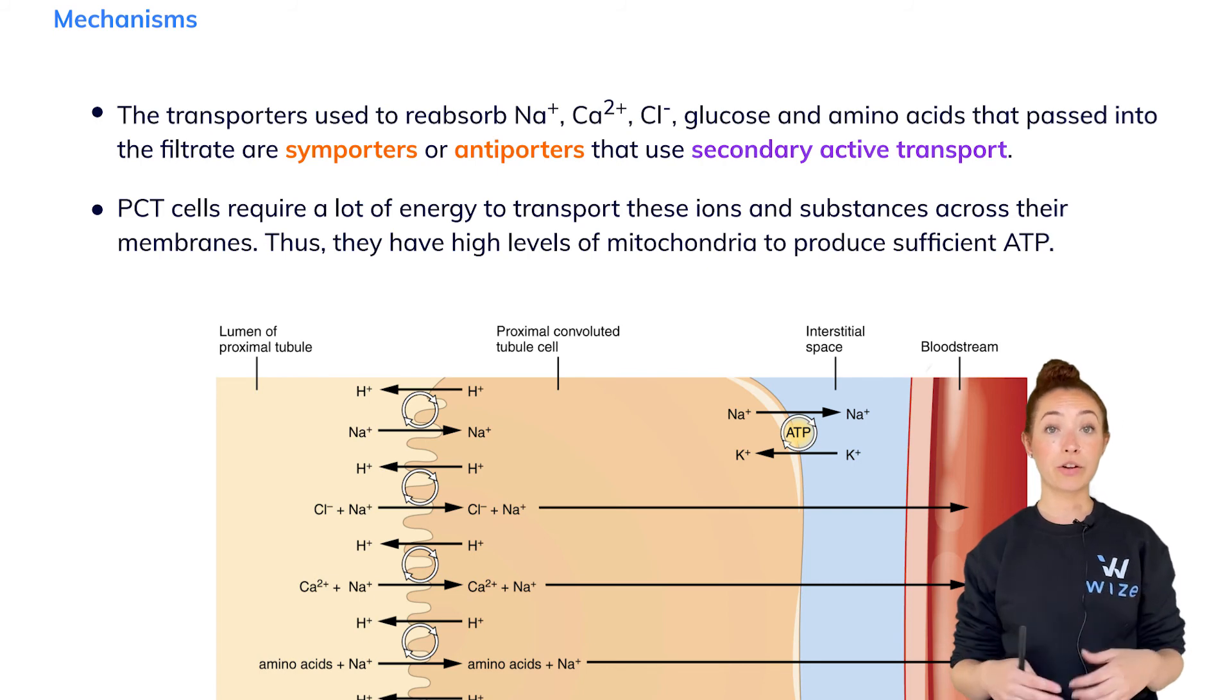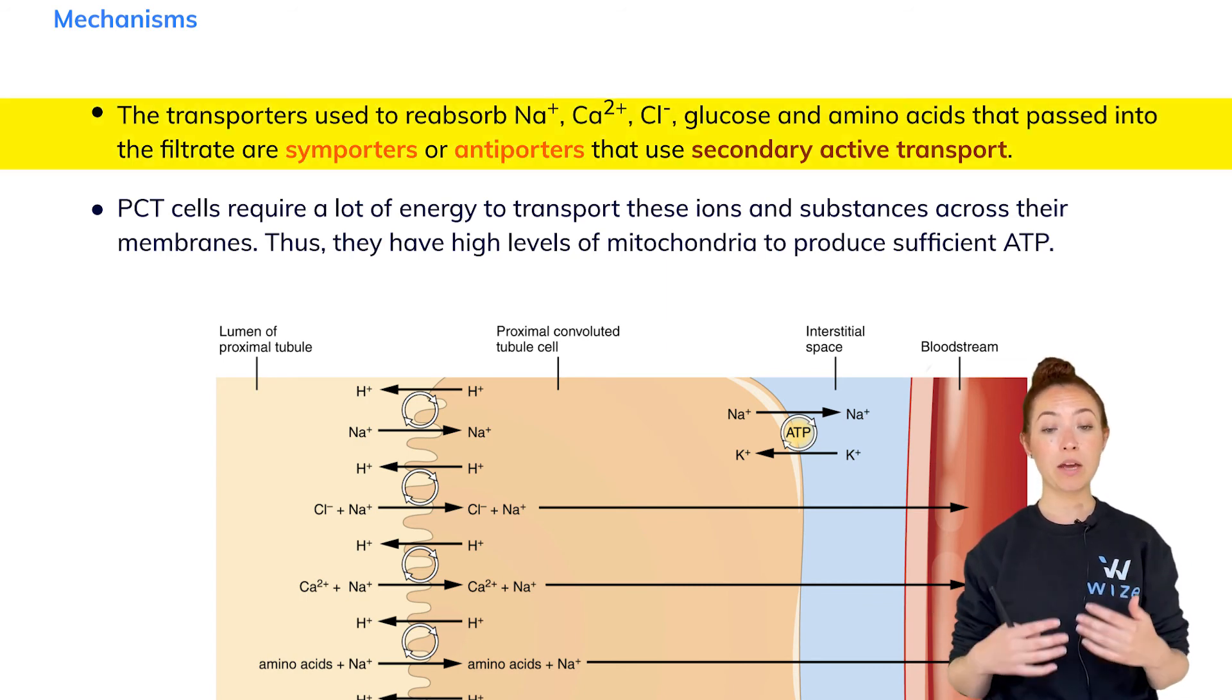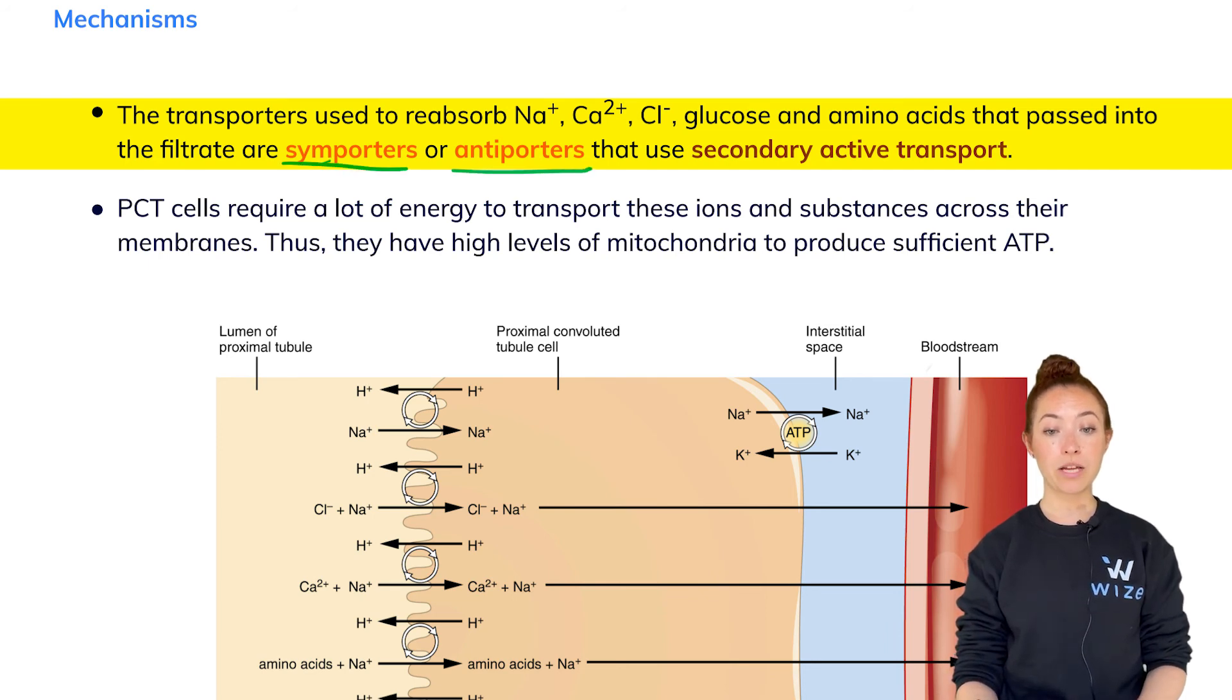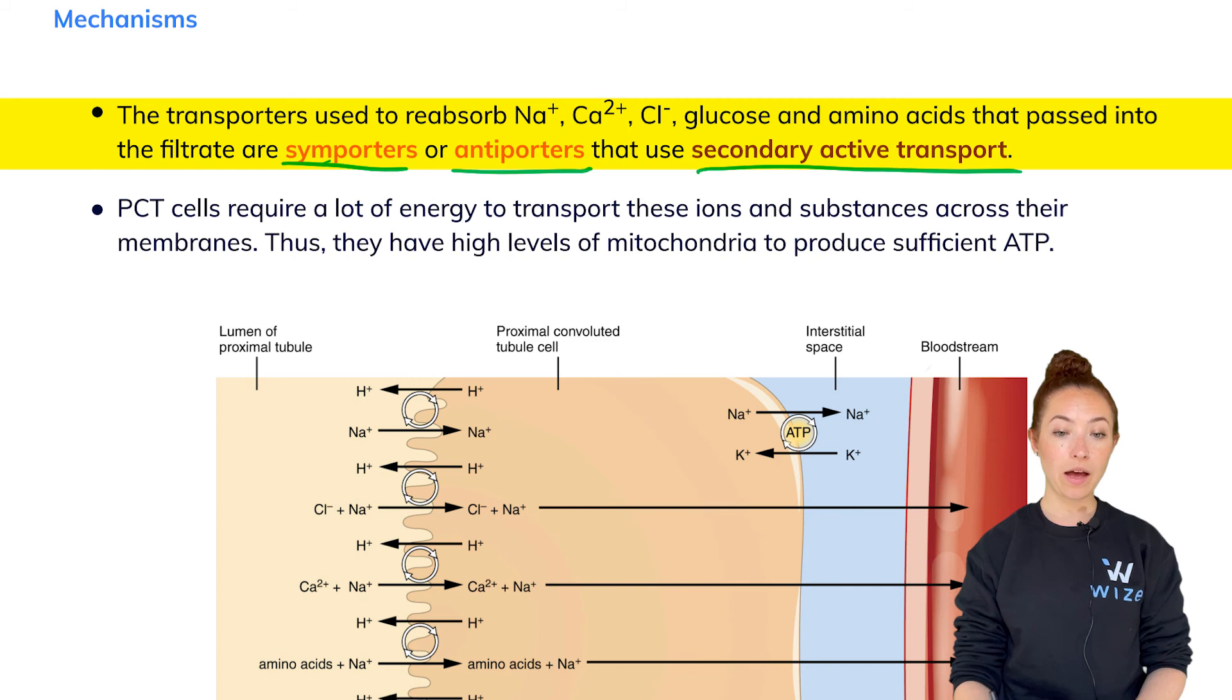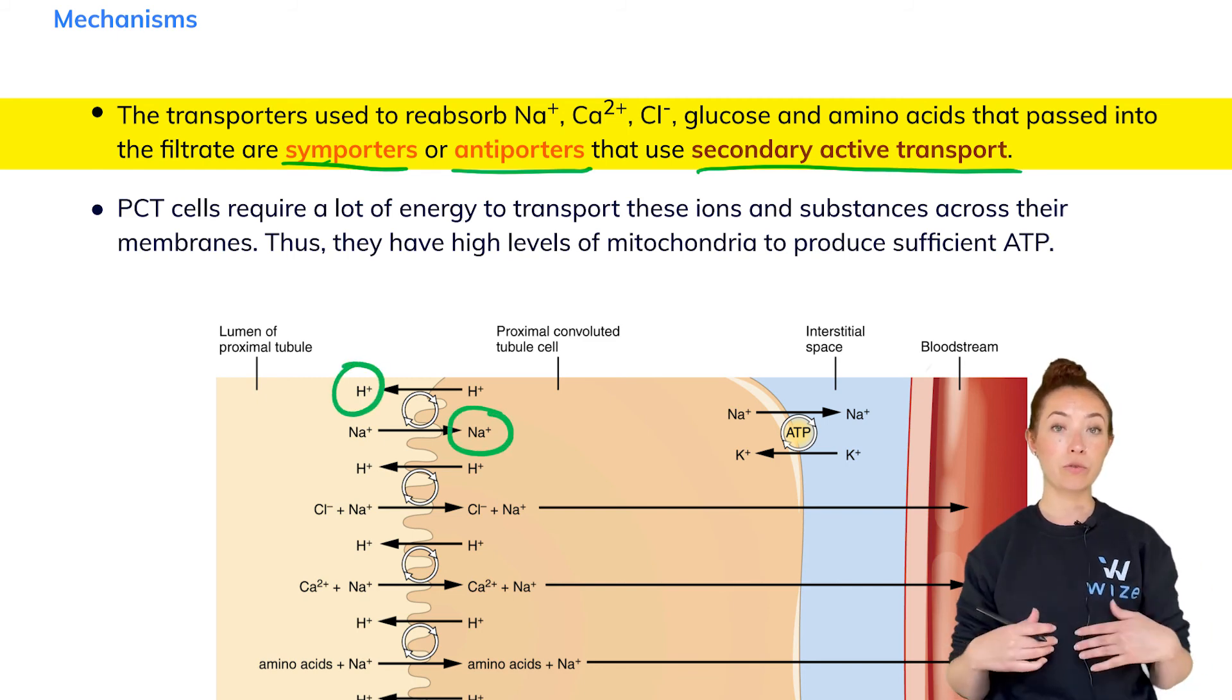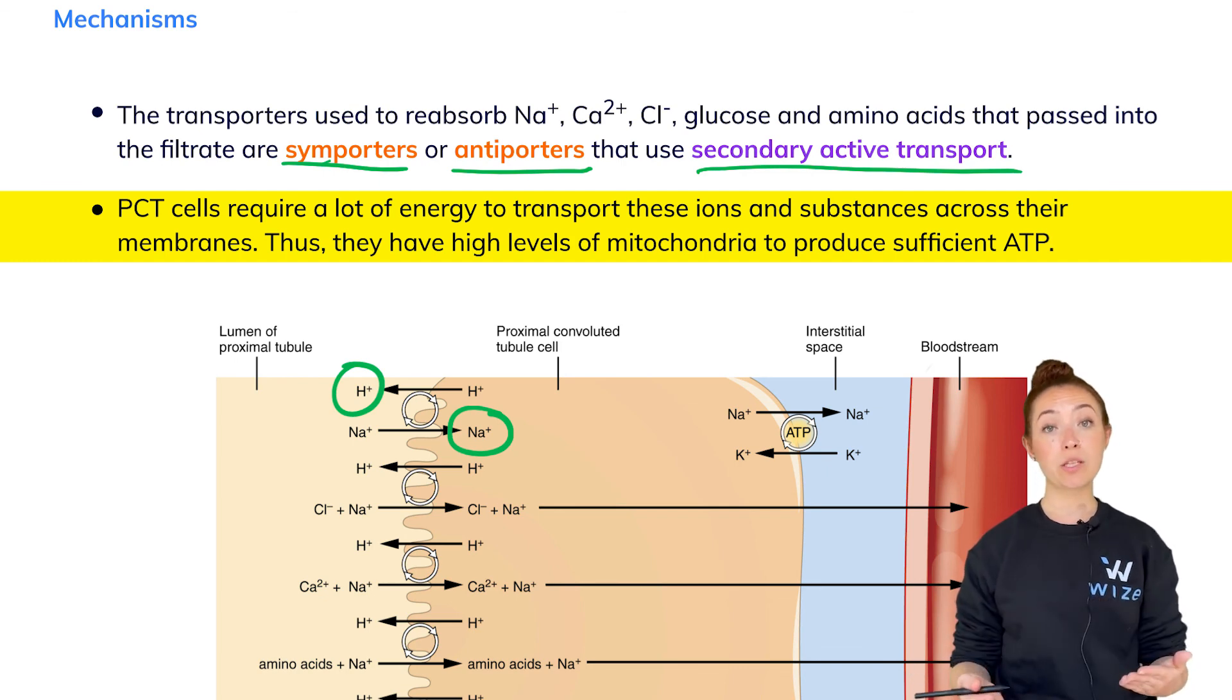A word on the mechanisms that are occurring here at the level of the PCT. You may have noticed already on a previous image that a lot of what's being reabsorbed here is actually being absorbed in symporters or antiporters that use secondary active transport. So our body loves to couple reabsorption of things to excretion of other things. For example, here we see some examples of antiporters where getting rid of some protons helps us absorb some other molecules and so on and so forth. Those details aren't super relevant for the MCAT, so don't worry about memorizing that. Just keep in mind that there's a lot of secondary active transport going on at the PCT. So PCT cells require a lot of energy to transport these ions and substances across their membranes because this is active transport. They have high levels of mitochondria that produce lots of ATP so that they can maintain a nice gradient of ions that are being used to drive this secondary active transport.